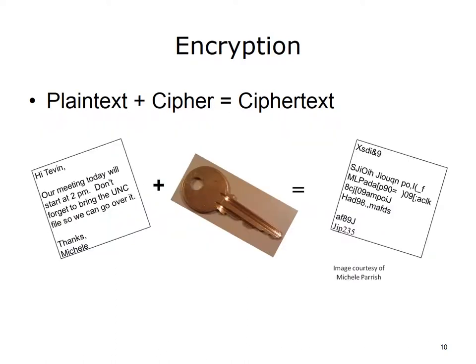A tool that can be used to ensure the integrity of data is encryption. Encryption is the process of taking data, referred to as plain text, and applying an encryption algorithm called a cipher to create ciphertext. This ciphertext is unreadable by anyone that intercepts the data as it is being transferred. In order to decrypt the data, a receiver must have the same cipher and the key that was used to encrypt the data.